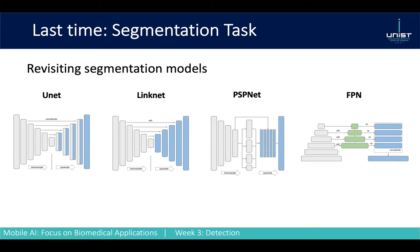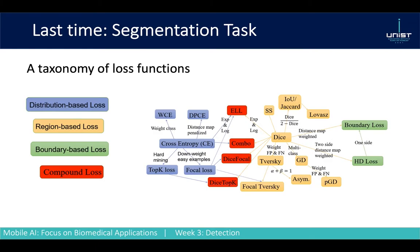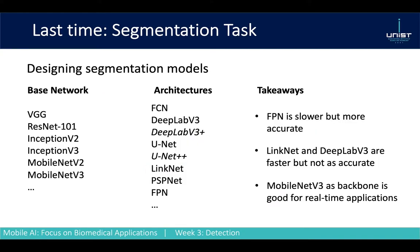We revisited classical segmentation models and showed they all share common backbones. For the decoding part we can modify a little bit and end up with slightly different architectures that fit better or worse for different cases. These are the four more common ones you'll often meet in papers for biomedical imaging. We also covered a map of segmentation losses — region-related or boundary-related — and you should know common ones like cross entropy and dice loss and how to use them.